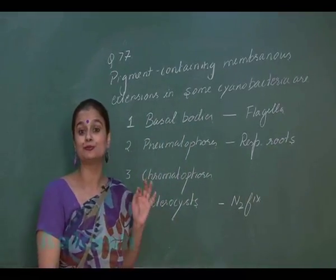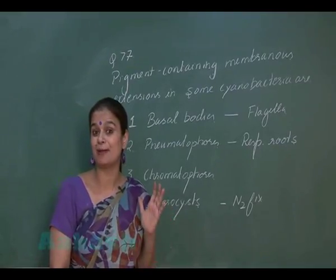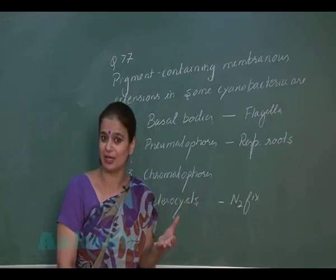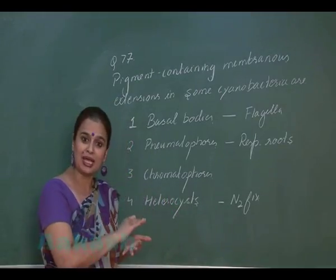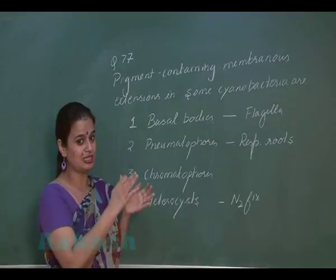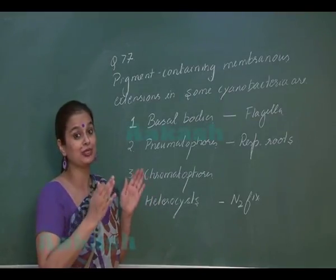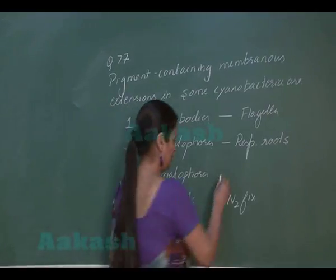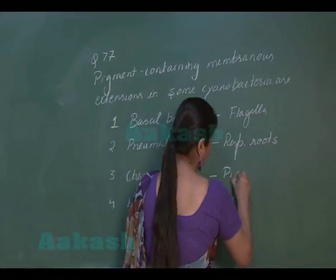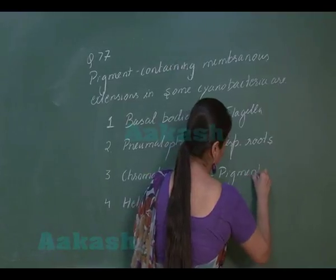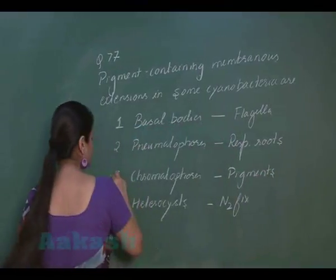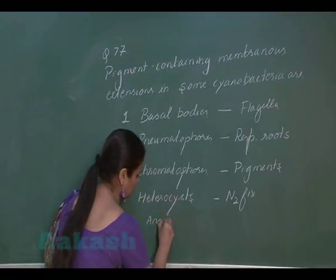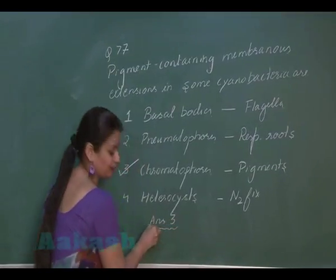Chromatophores are membranous structures which contain photosynthetic pigments. By absorbing light energy, these pigments convert it into chemical energy, which can be further utilized for synthesis of food. These are the structures which possess the pigments, so for question number 77 the right answer is option 3.